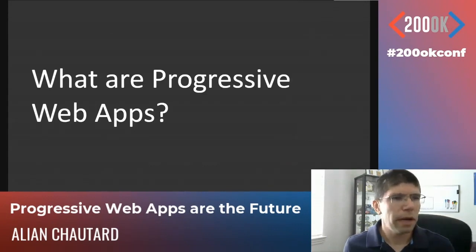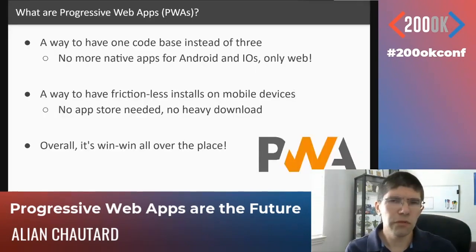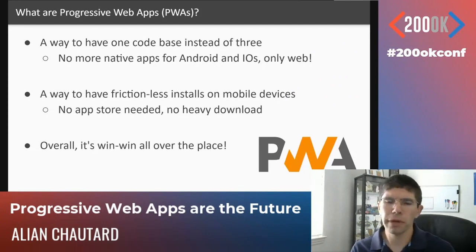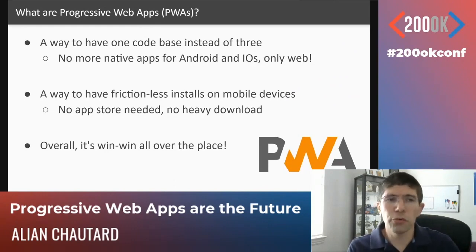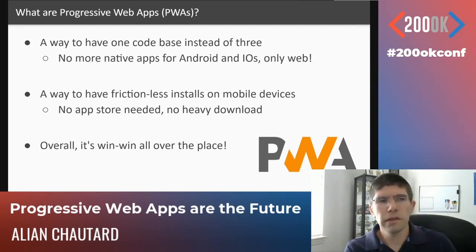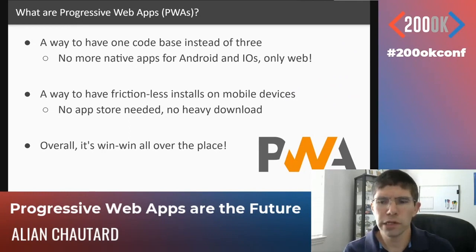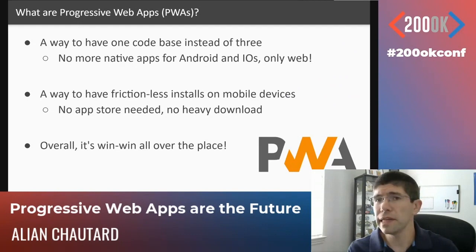So what is a progressive web app? When we build a progressive web app, what we're doing is working on a way to have one code base instead of three. The idea is you build a web app that's going to work in a browser and is also going to be what you use on Android and on iOS for mobile devices. So you write the code just once and all of your users, no matter their platform, are going to be using that same web app.